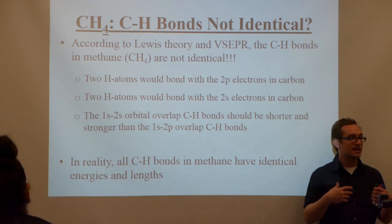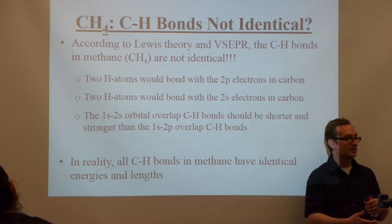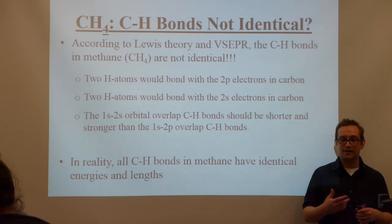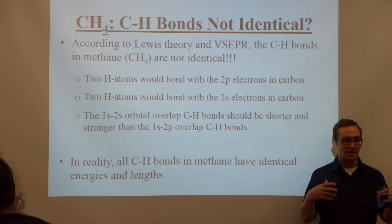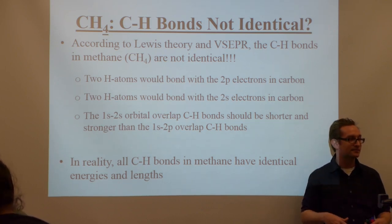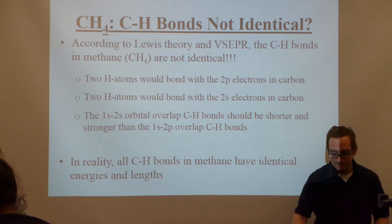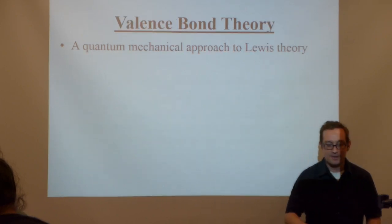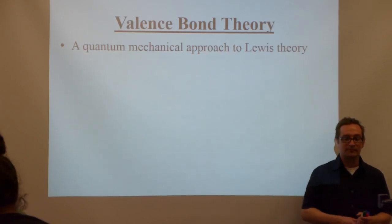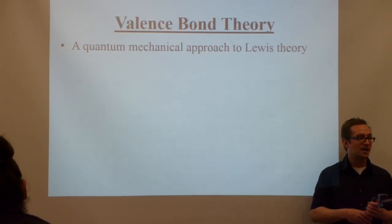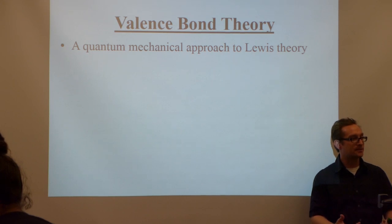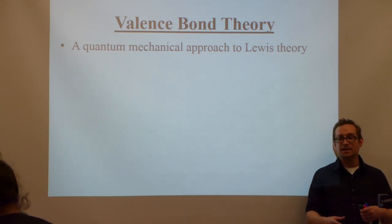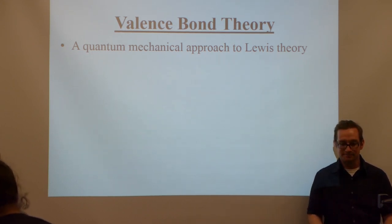Clearly, we need some other bonding model to explain the fact that all the bond energies are the same. All the bond angles in methane are all the same — perfect tetrahedrons, 109.5 degrees. So we have this bonding theory called Valence Bond theory that helps explain the shapes of molecules using a new bonding model.